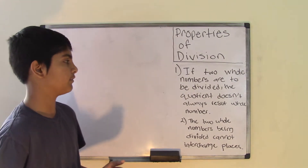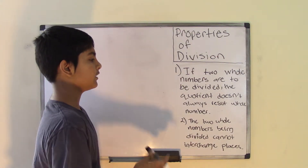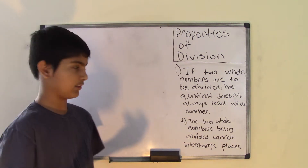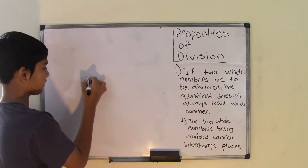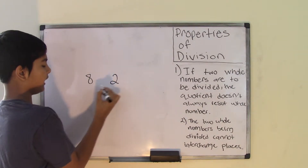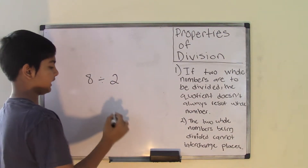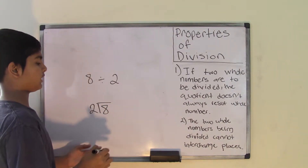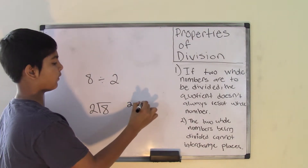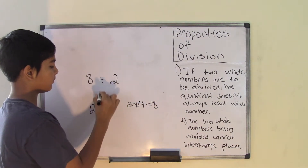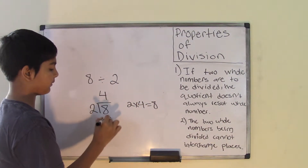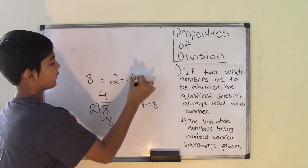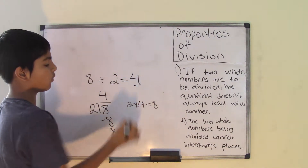The first property of division says that if two whole numbers are to be divided, the quotient doesn't always result in a whole number. So let's say we have the two whole numbers 8 and 2, and we are to divide them. The number 8 is the dividend and the number 2 is the divisor. We know that 2 times 4 gives us 8, so the number 4 will be our quotient. It goes into 8 evenly, and 4 is a whole number.